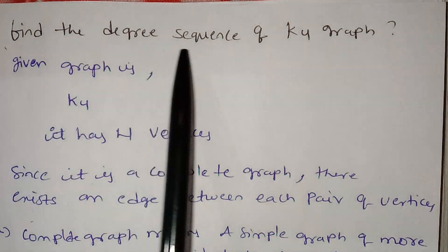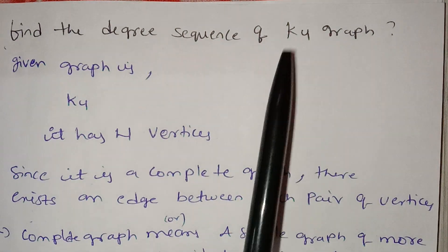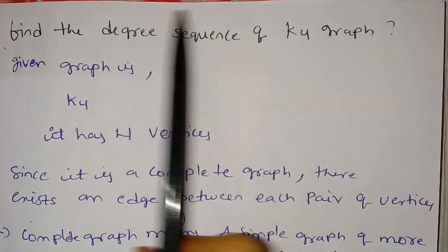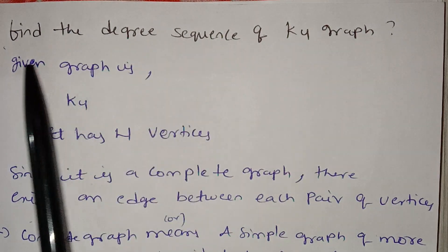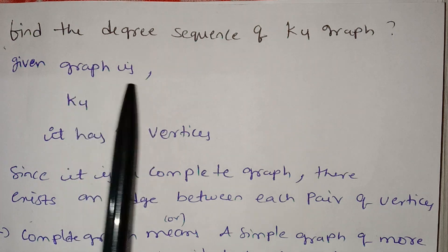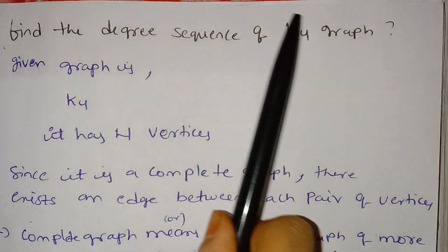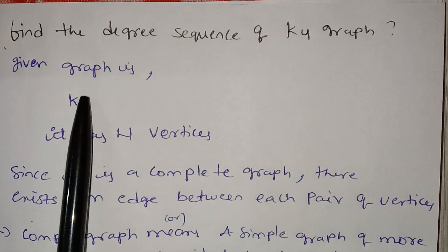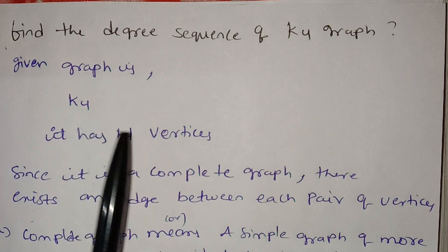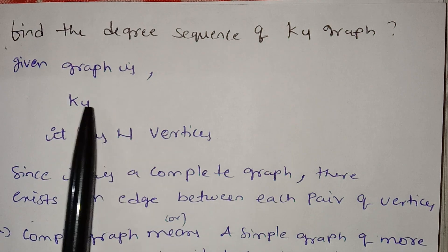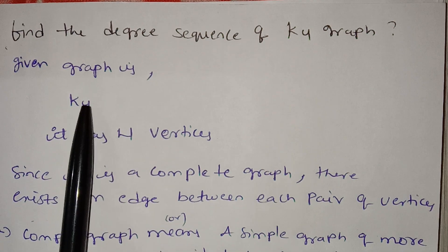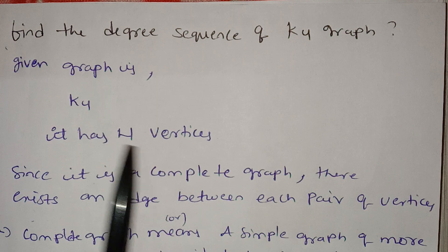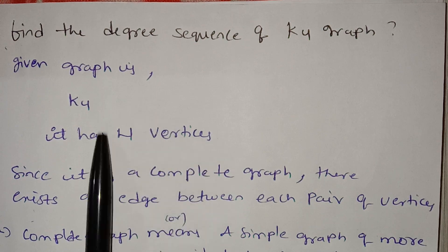Find the degree sequence of the K4 graph. The given graph is K4. It has 4 vertices — if you have a K4 graph, you have 4 vertices.